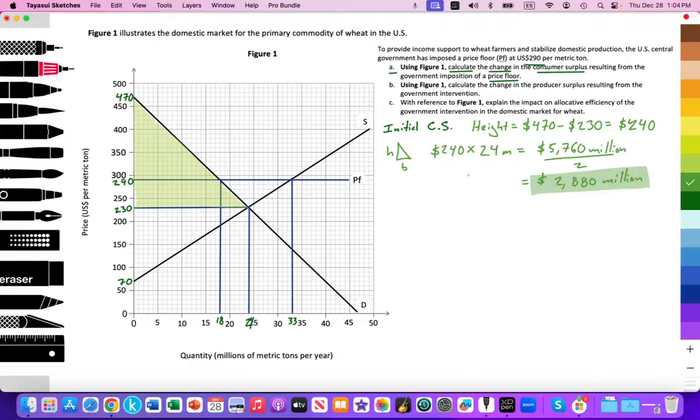Now I got to figure out the final, the surface area of the final consumer surplus. So I'll use a different color. The final consumer surplus. Again, it's going to be a triangular area. The price has been increased through the government intervention from 230 to 290. And what that does is, just for review, it's going to increase the quantity of supply. It's going to motivate, incentivize producers to increase their production at that higher price while cost of production are held constant. And that production will increase from 24 to 33 million metric tons.